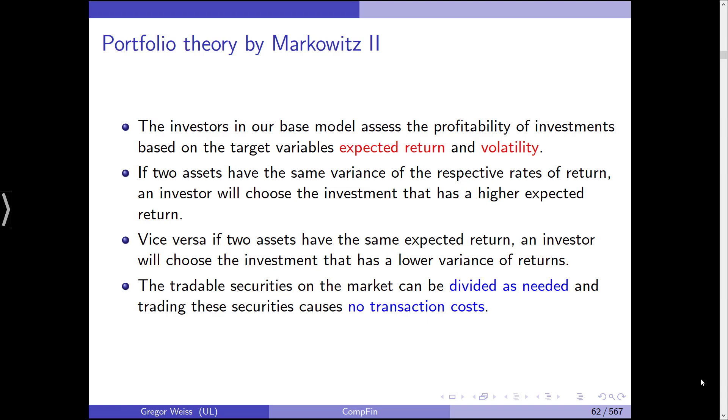And the tradable securities on our market can be divided as needed. This is obviously a deviation from reality. Usually you cannot buy two thirds of one stock. But here we just assume that we can invest 30% of our money in one security. And trading these securities causes no transaction costs. So we have a frictionless financial market. We don't have taxes, we don't have transaction costs. But in our base model, it makes sense to keep things simple.